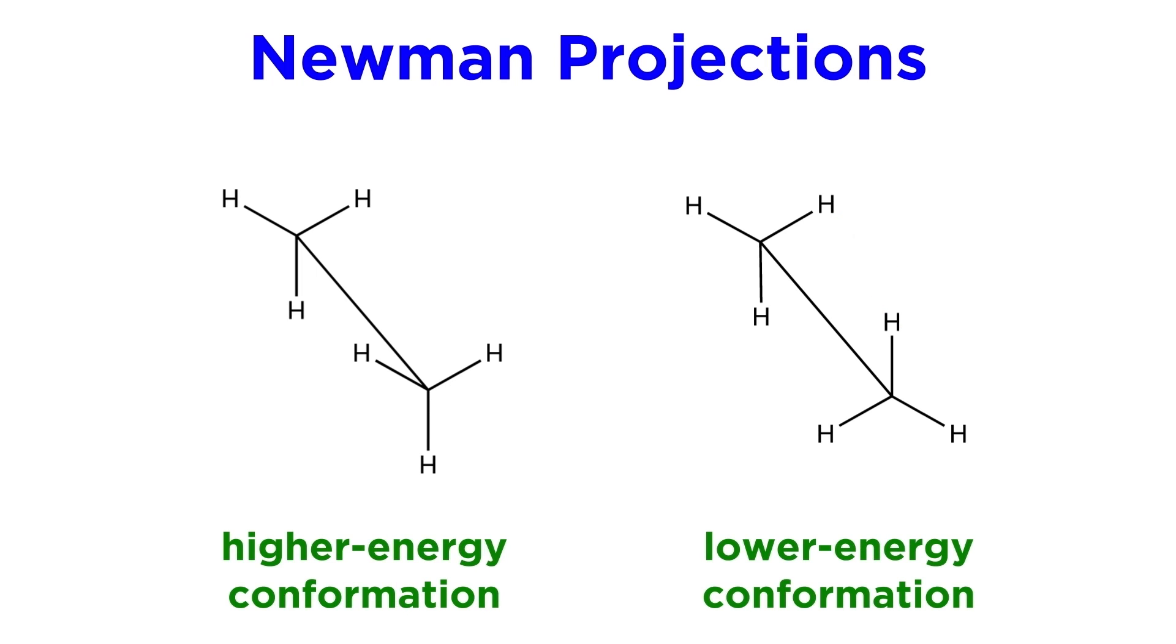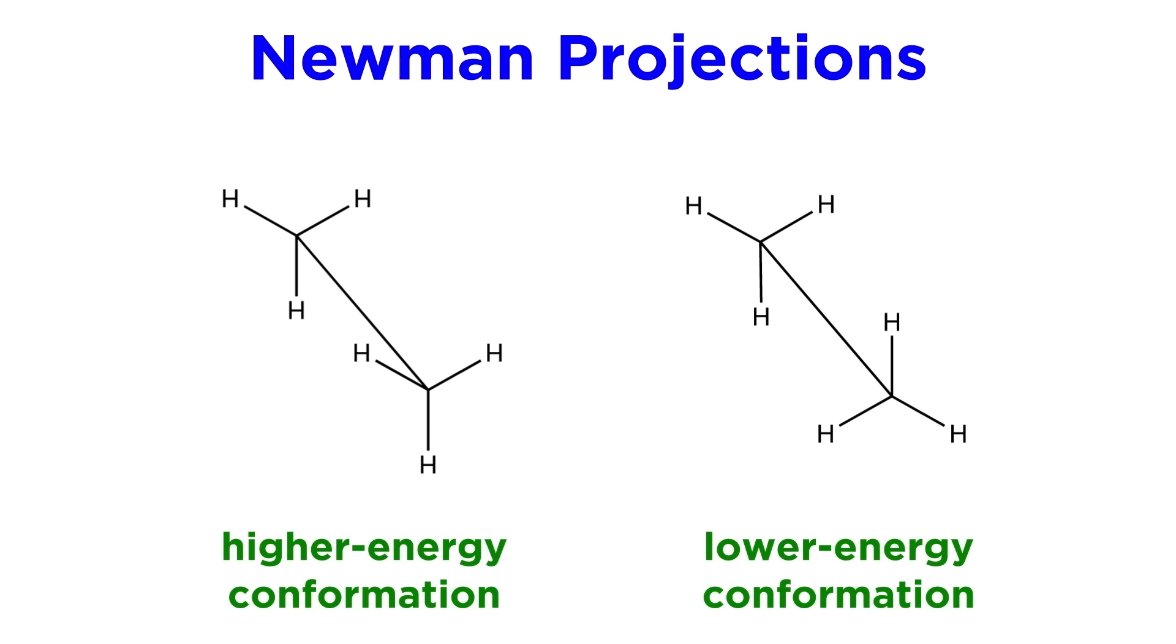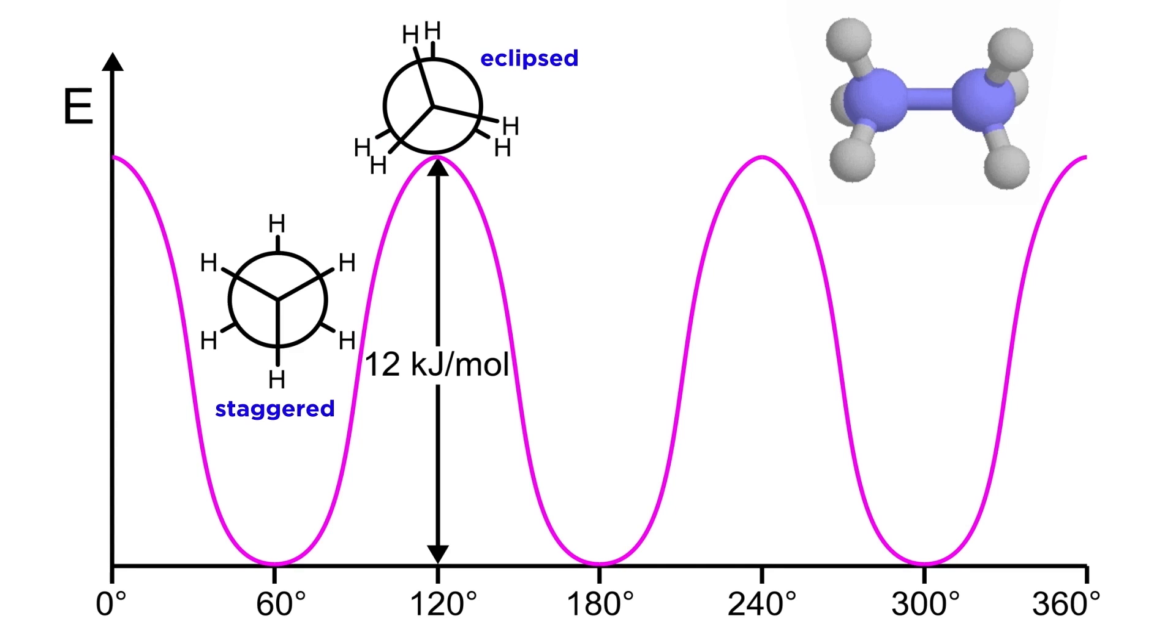Because the hydrogens are forced to be a bit closer together, this is a higher energy conformation. We can see this energy diagram here that explicitly shows the discrepancy in potential energy as this sigma bond spins and we move between staggered and eclipsed conformations.